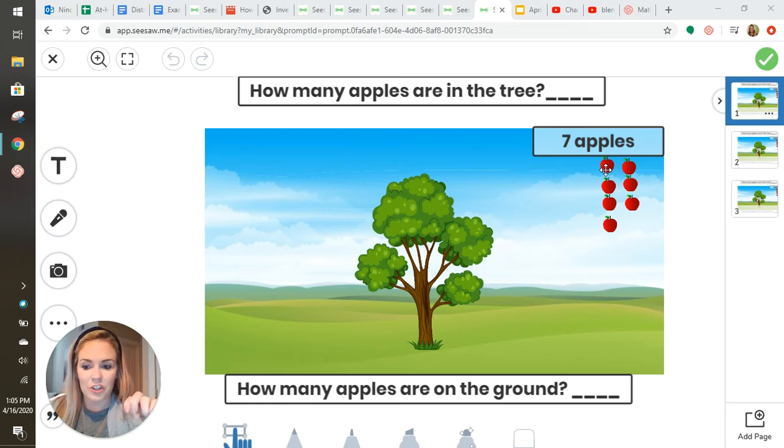Earlier this week we've been working on combinations of six with yellow and red counters, learning that six doesn't have to be three and three—it could be four and two. Today we're going to use the picture mat to work with seven.